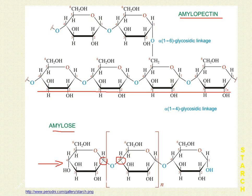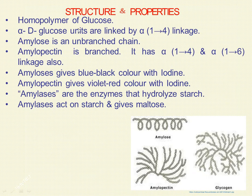Amylopectin has a linear chain like amylose but also contains branches. The branches result from the formation of alpha-1,6 glycosidic linkages. Two amylose chains are linked by an extra bond — the alpha-1,6 glycosidic linkage — formed between the first carbon of one chain and the sixth carbon of another, with removal of a water molecule. So amylose is linear and amylopectin is branched, containing both alpha-1,4 and alpha-1,6 linkages.